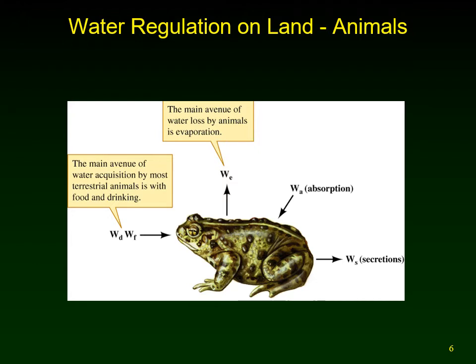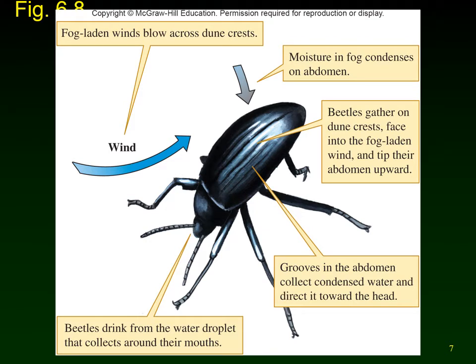Here's a visual example of that equation — the water relations of a terrestrial animal. The acquisition of water is mainly through food and drinking. The main loss of water from animals is evaporation, but we can also have water absorbed through the skin and water secreted out through the skin, urine, or different types of secretion. The main factors are evaporation versus eating and drinking.